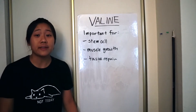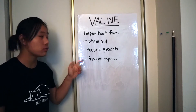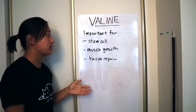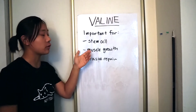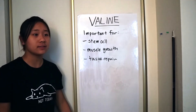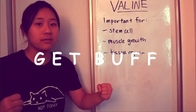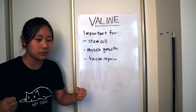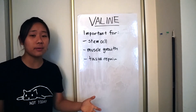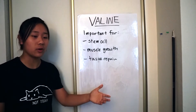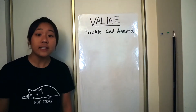Other important things about valine: it helps muscle growth and tissue repair, which is also why it's important for regenerating stem cells. So if you want to get buff, you've got to eat protein so you can get valine and other amino acids that help promote your body's repair.